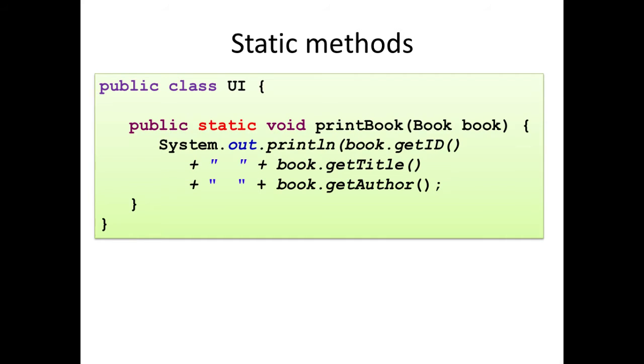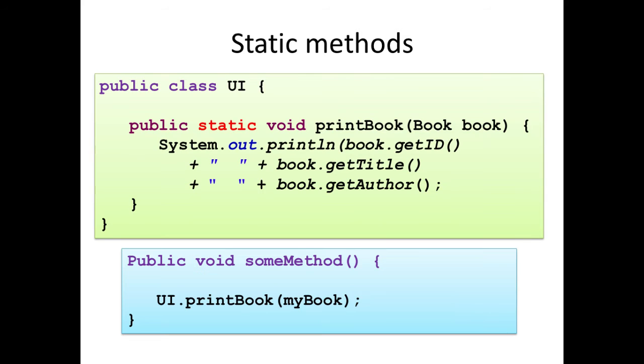Now if we had made our print book method static, and all we need to do to accomplish this is to insert the word static into our method declaration, then we could call this method without first having to create an instance of the class. We reference the method directly using the class name followed by the method name. Note that this is not the same as what we did previously where we referenced a variable name followed by the method name where the variable was an instance of the class. Let's have a go at doing this with our application so that you can see it in practice.